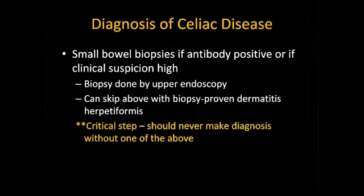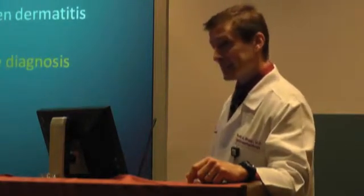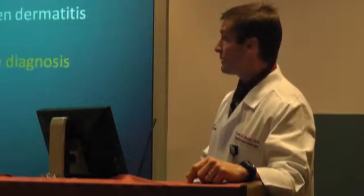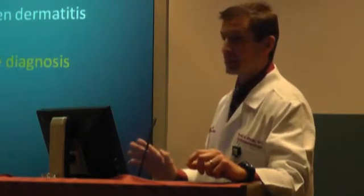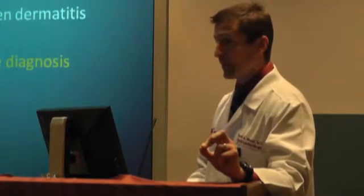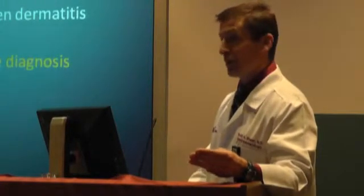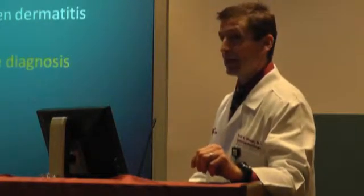Small bowel biopsies are really the way to go — this is the true gold standard. If you have a positive tissue transglutaminase or endomesial antibody, you should talk to your gastroenterologist or primary care provider about getting a small bowel biopsy. It's done quite simply with endoscopy under light sedation, takes just a few minutes, and we have an answer in a few days. If you have the skin rash dermatitis herpetiformis and it's been biopsied consistently, you can skip the endoscopic biopsy. But you should never make the diagnosis without one of these biopsies, because going on a true gluten-free diet is a major cost constraint, can lead to social isolation, and is for the rest of your life.